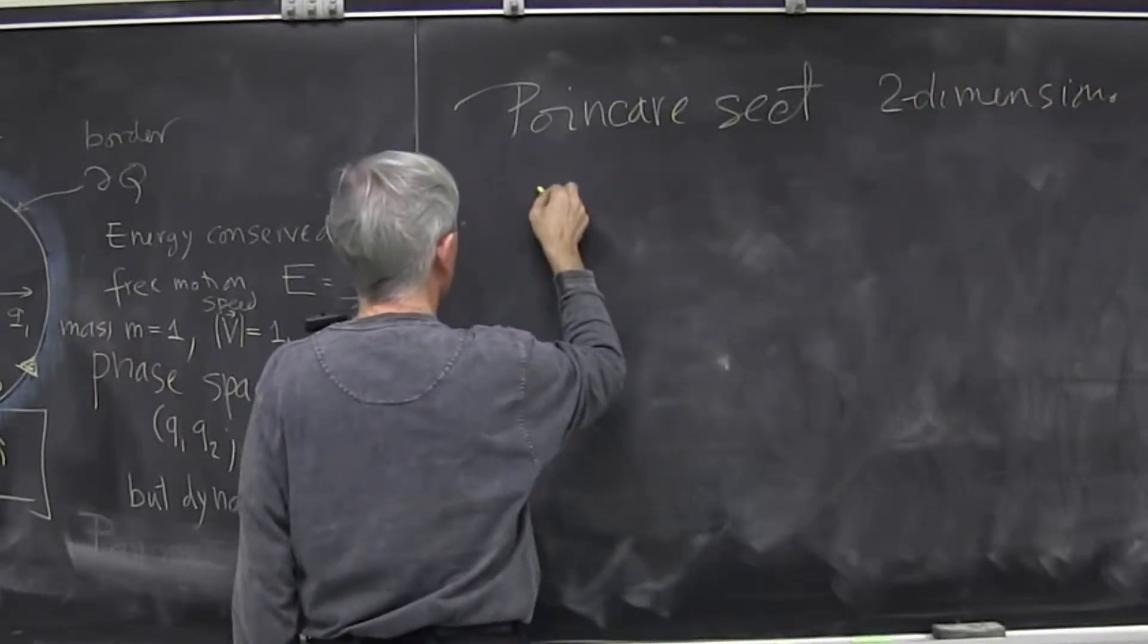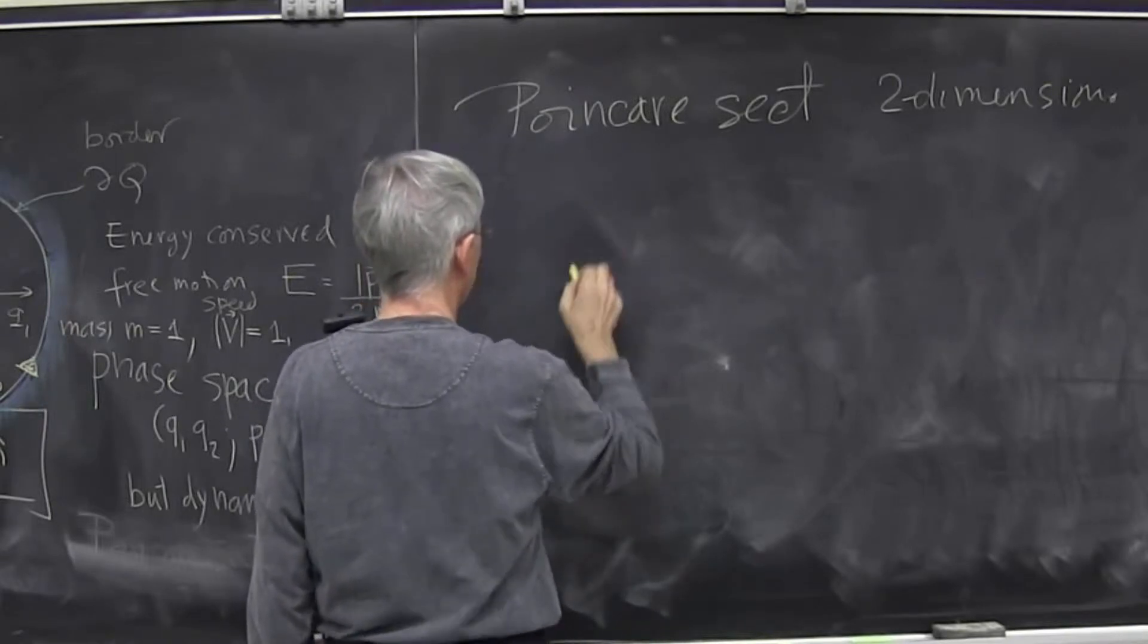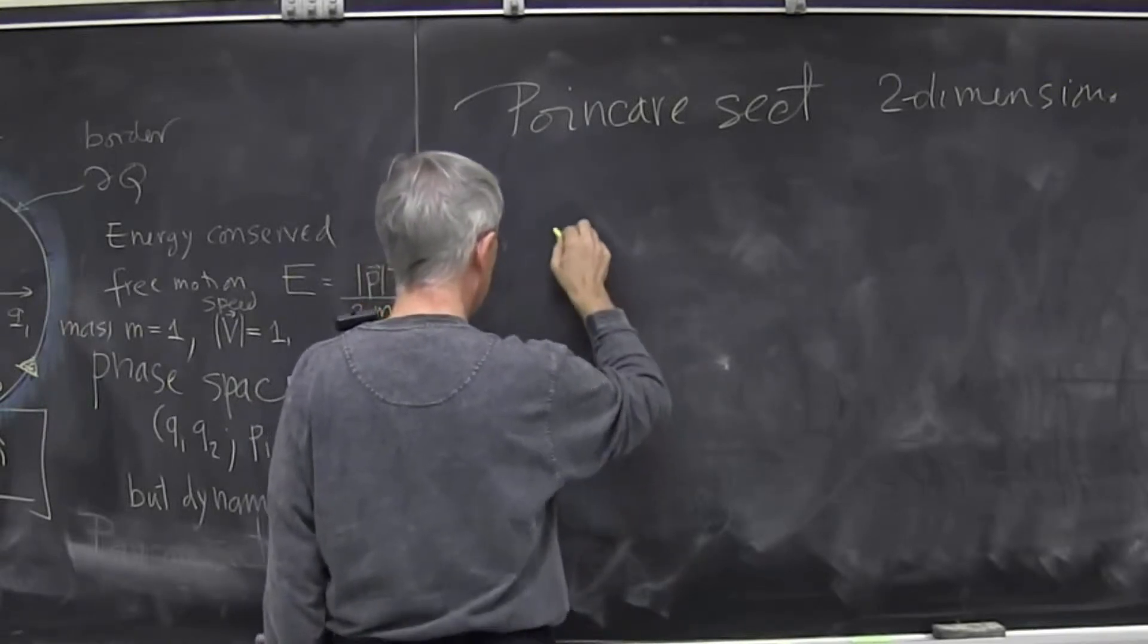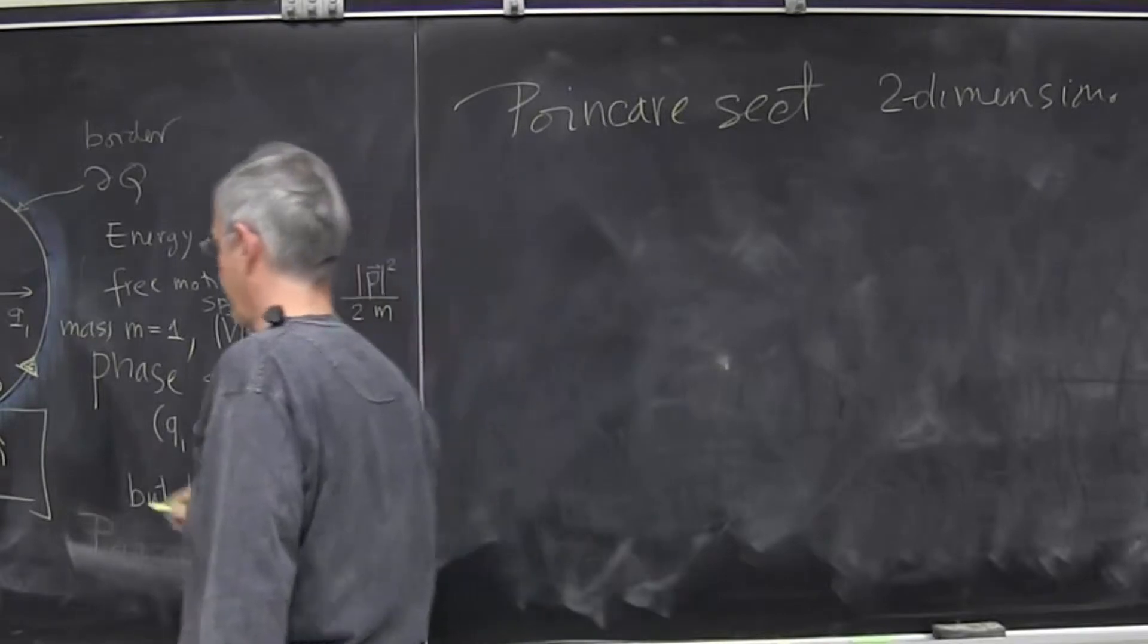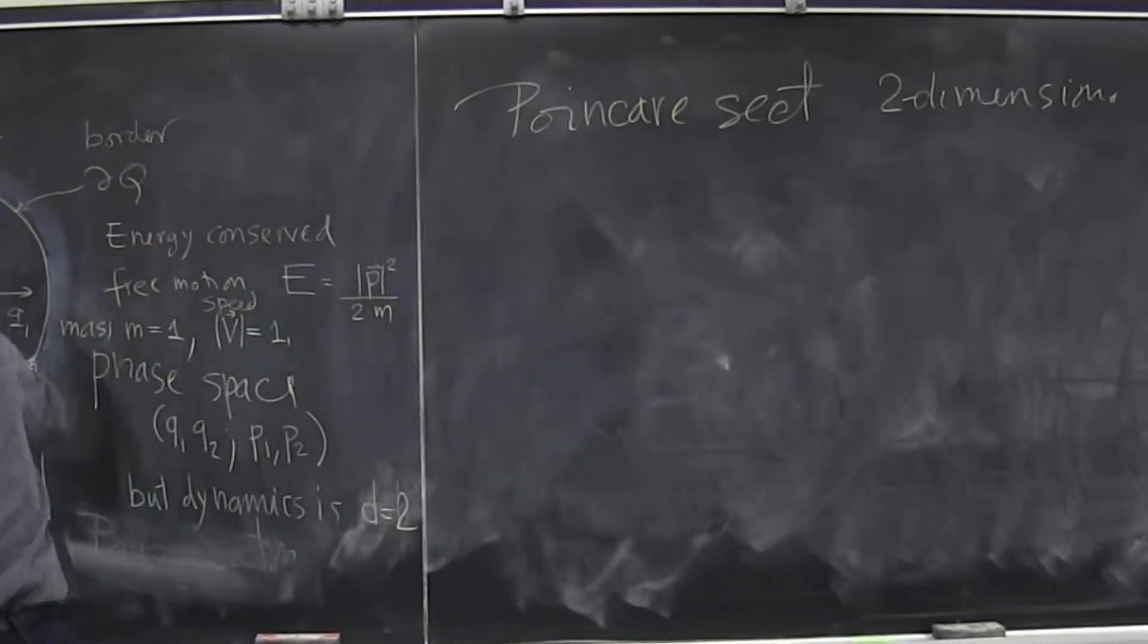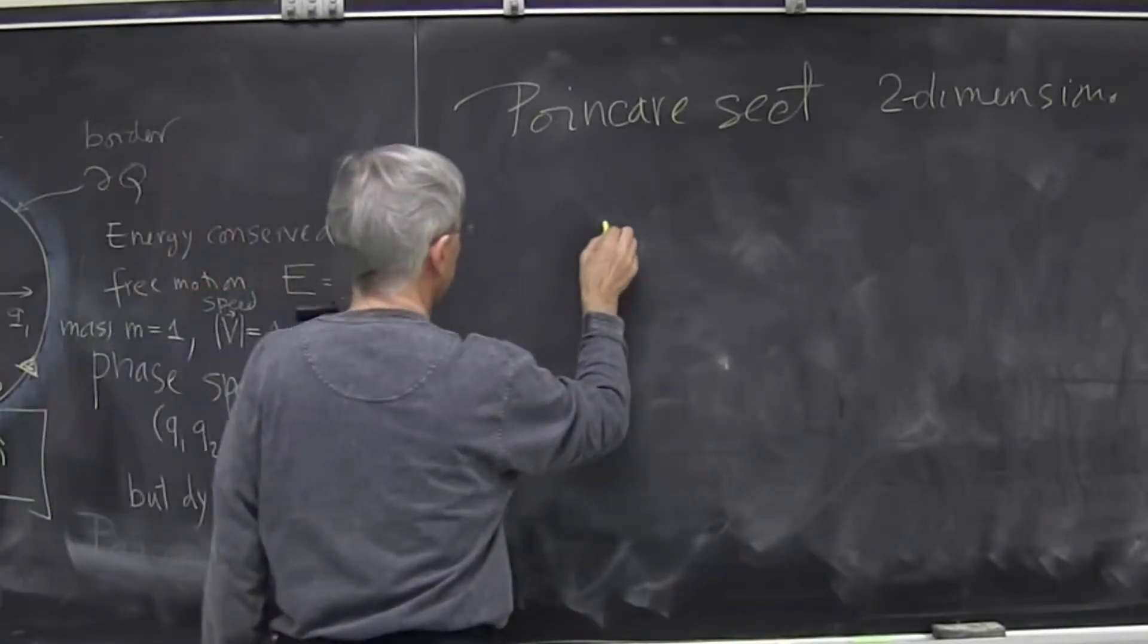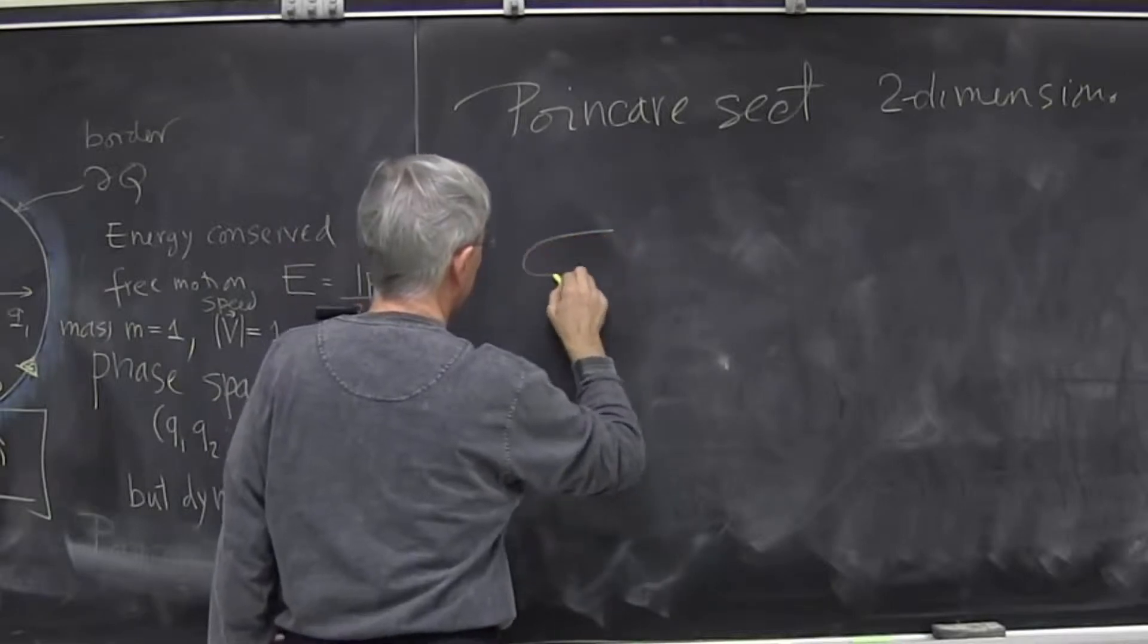So the Poincare section is two-dimensional. And in this particular case, I can try to draw it in three dimensions.